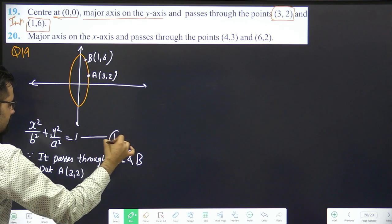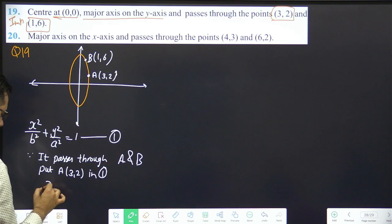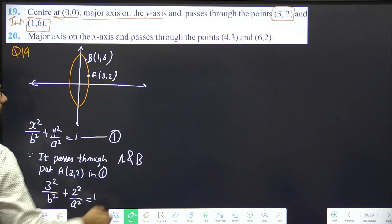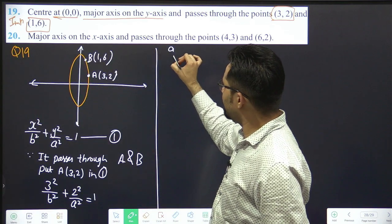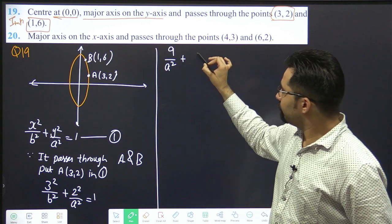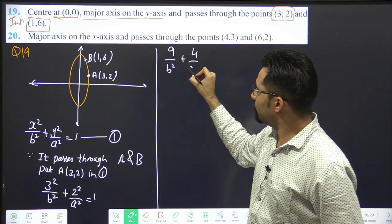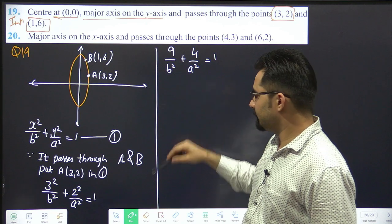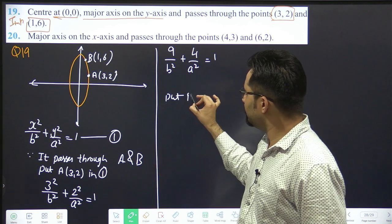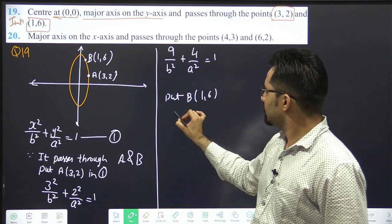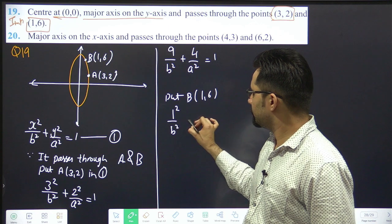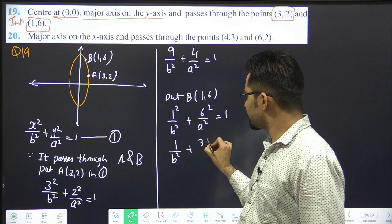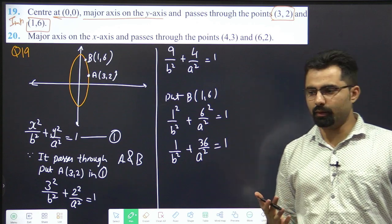Put A, 3,2 in first. 3 square by b square plus 2 square by a square equals 1. That is 9 by b square plus 4 by a square equals 1. Again put B, which is 1,6. 1 square by b square plus 6 square by a square. That is 1 upon b square plus 36 upon a square equals 1. Now how to solve this?